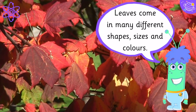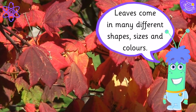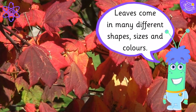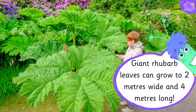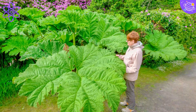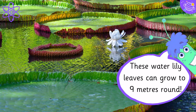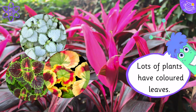Leaves come in many different shapes, sizes and colours. Giant rhubarb leaves can grow to 2 metres wide and 4 metres long. These water lily leaves can grow to 9 metres round. Lots of plants have coloured leaves.